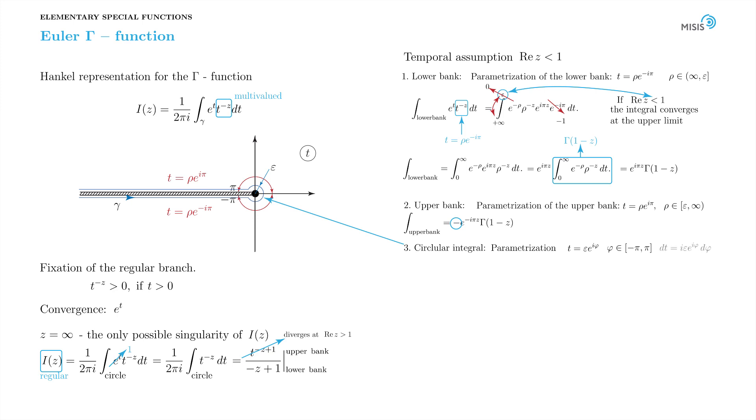The t differential is now dt equals i epsilon e to i phi, d phi. Since the modulus of t is infinitesimal, it is simply equal to epsilon. In the integral, we substitute the exponential with 1. And the integral is turned into a simplified one over the angle phi.